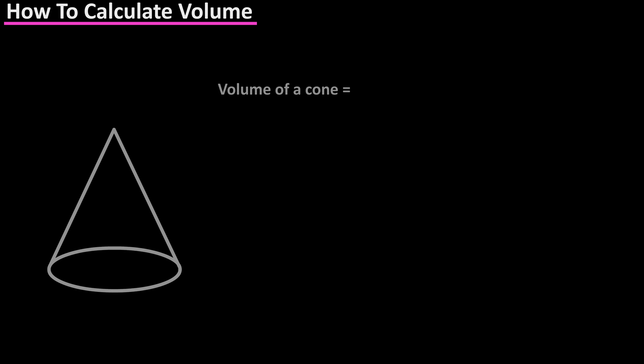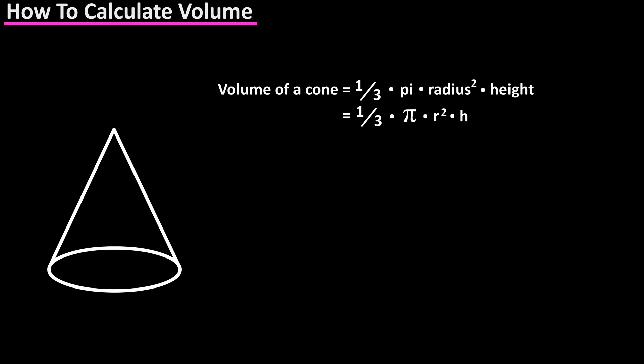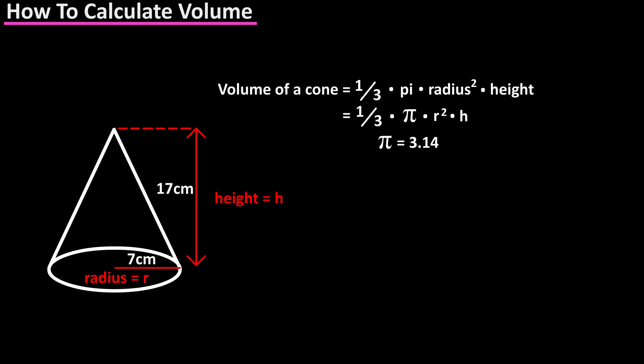The formula for calculating the volume of a cone is 1 over 3 times pi times R squared times H. Again, pi is a constant that is approximately equal to 3.14, R is the radius of the circle at the bottom of the cone, and H is the height of the cone.